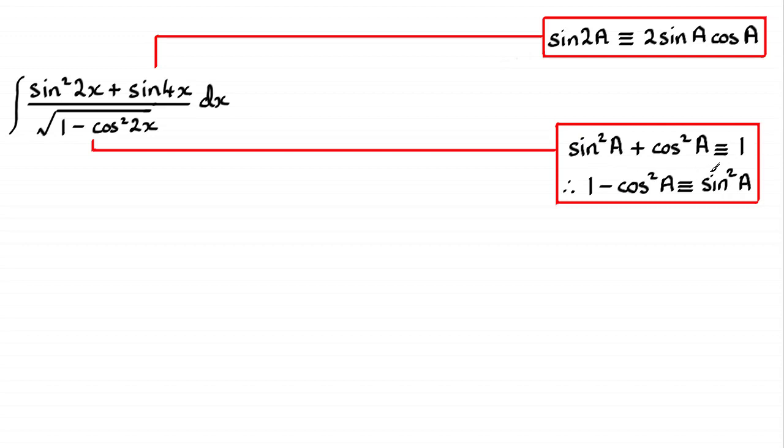So if you rearrange this, 1 minus cos squared a is identical to sine squared a. My a is 2x. So I can rewrite the denominator as the square root of sine squared 2x.